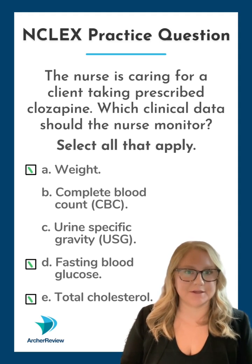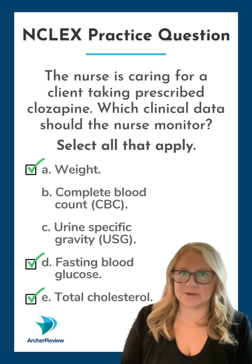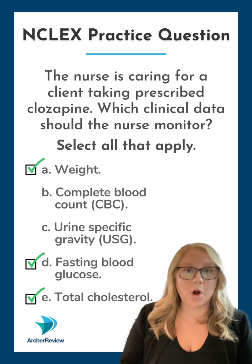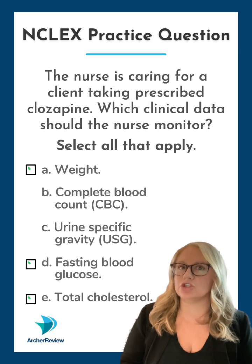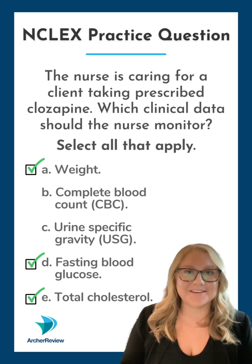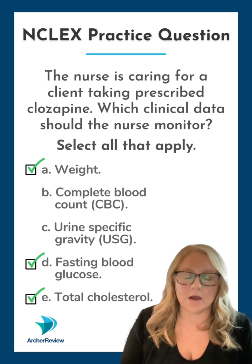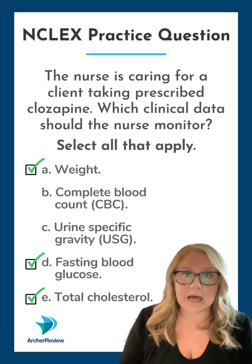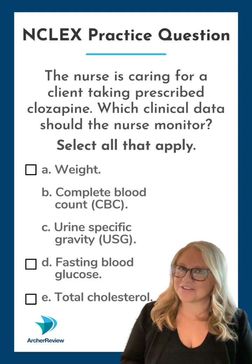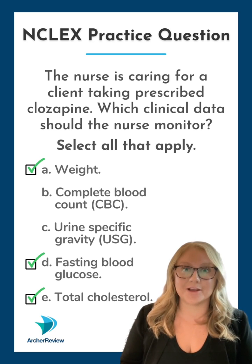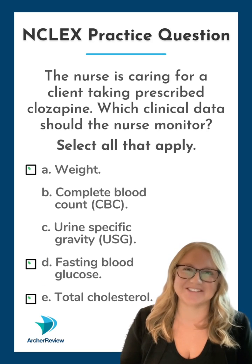Now we're left with a CBC and a urine specific gravity. There's one other thing that Clozapine is notorious for, and that is the complication of neutropenia, which means those neutrophils — that type of white blood cell — are really, really low. And naturally we have to monitor for that by monitoring our client's complete blood counts.